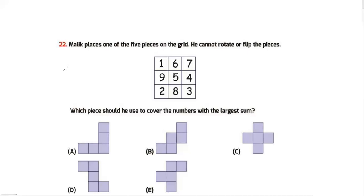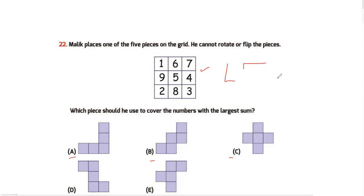Question 22: Malik places one of the five pieces on the grid. He cannot rotate or flip the pieces — rotate means turning the piece, flip means mirroring it. Which piece should he use to cover the numbers with the largest sum? Let's check the options.